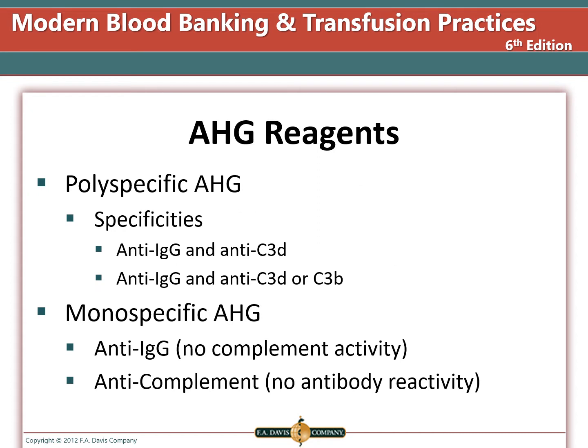There can be two types of AHG antibodies. First, polyspecific, which will react with cells coated with antibodies or complement — anti-IgG and anti-C3D or anti-C3B, all in one reagent. The second type is monospecific and these will only react with one or the other, either IgG or complement, but not both. These can be antibodies from rabbits or murine such as mice or rodents.